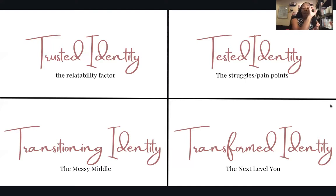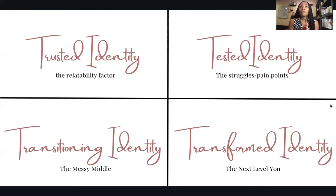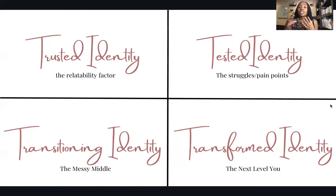You see how that example took all four pillars — starting with the trusted identity, talking about where I was tested, highlighting the transitioning piece that most people don't share, and then moving into the transformed identity. The four together created a post that lets people meet me at different places: some just want a coach they can relate to, some need validation that they're not alone in their struggles, some want to know the messy middle is normal, and some want to see that transformation can take place.